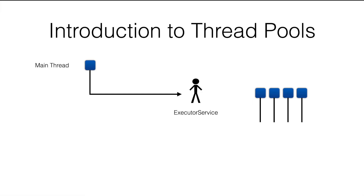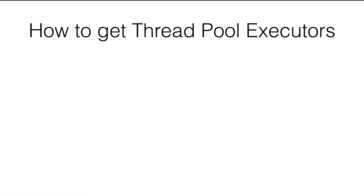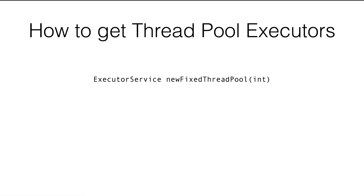Let's see how to create an executor service that will manage a thread pool. For the exam, you need to be aware of three different methods. The first one is newFixedThreadPool. This method returns an executor service that manages a fixed number of threads, determined by the parameter passed in. So if we pass four, the executor service will manage four threads. We can pass any integer number and that many threads will be managed.